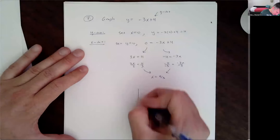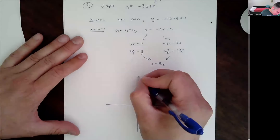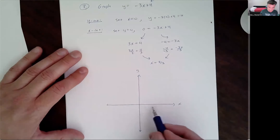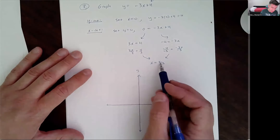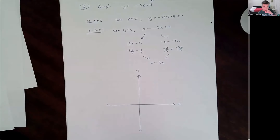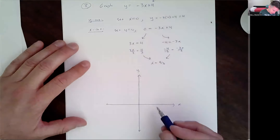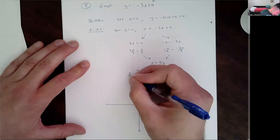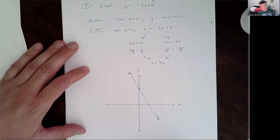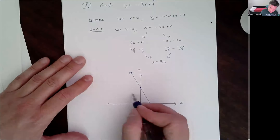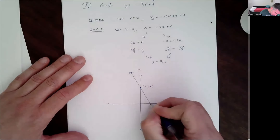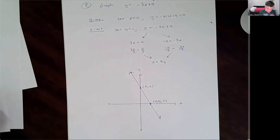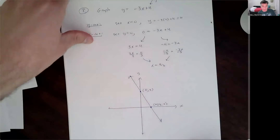Now I'm going to draw my coordinate axis system and look at where my x and y-intercepts should land. My y-intercept is positive 4, so up here somewhere. My x-intercept is positive 4 thirds — that's 1 and a third, about 1.3. So 4 is about 3 times as big. I'll draw the line freehand first and then label it. Even if it's not to scale, that's okay. So that's the point (0, 4) and that's the point (4/3, 0).